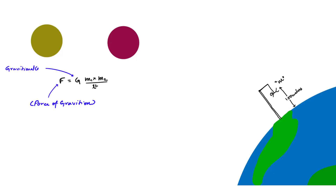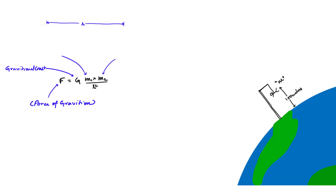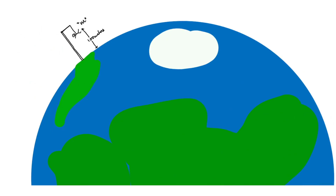In this formula, G is the gravitational constant, m1 and m2 are the respective masses of the objects, and r is the center-to-center distance between these two masses. We will replace the mass of Earth in place of m1 and your mass in place of m2, and r will be replaced by the center-to-center distance between you and Earth.